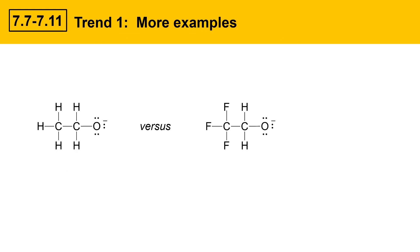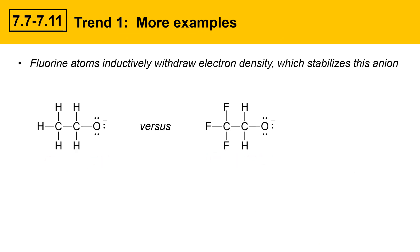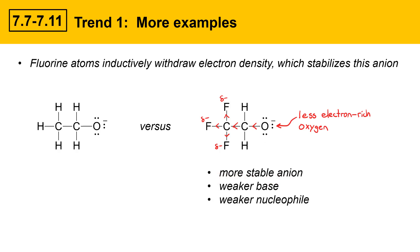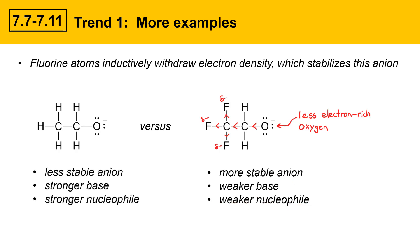Here's another example of trend 1: ethoxide versus trifluoroethoxide. The fluorine atoms inductively withdraw electron density, stabilizing the trifluoroethoxide anion. Each fluorine withdraws electron density from its attached carbon, making it partially positive, which in turn pulls electron density away from the negatively charged oxygen — effectively sharing some of the oxygen's electron density with the fluorines. That makes the oxygen less electron-rich, giving a more stable anion, a weaker base, and a weaker nucleophile. Ethoxide, by contrast, is a less stable anion, a stronger base, and a stronger nucleophile.